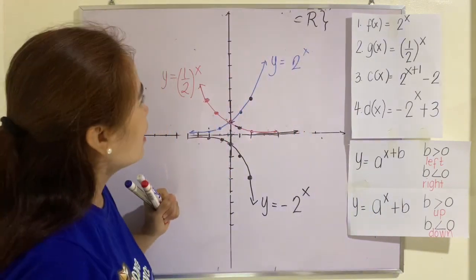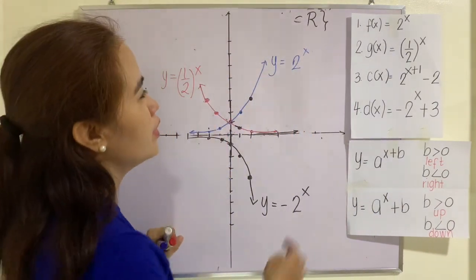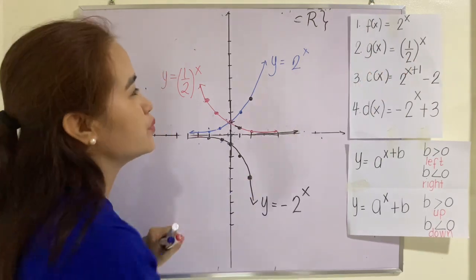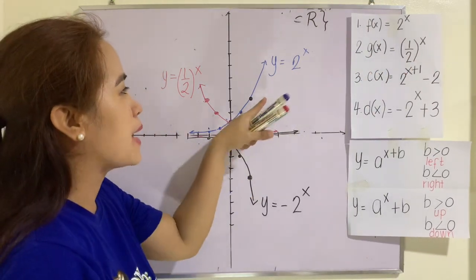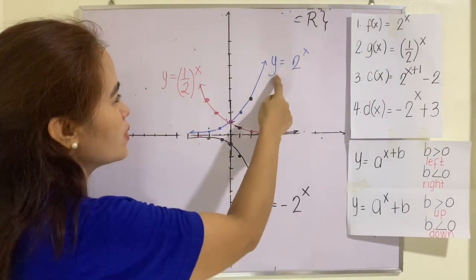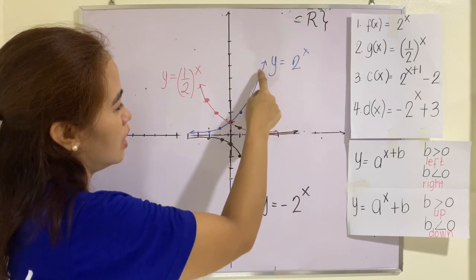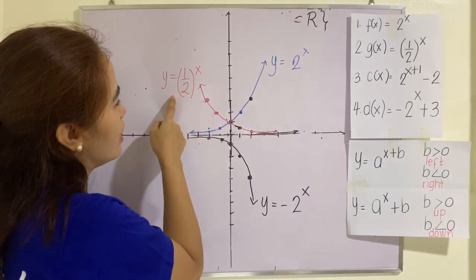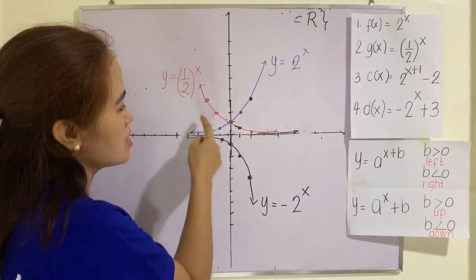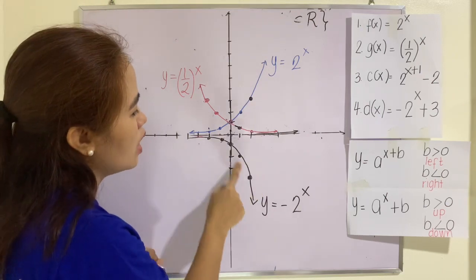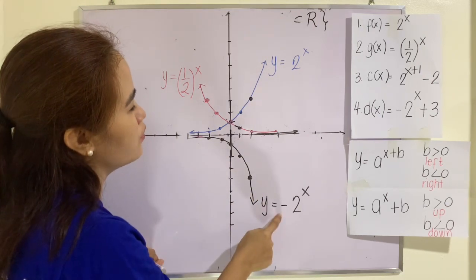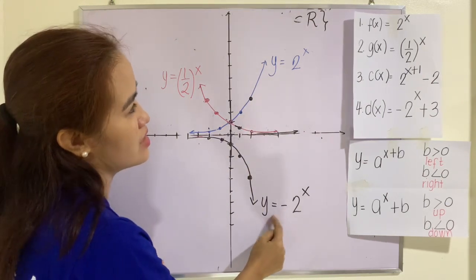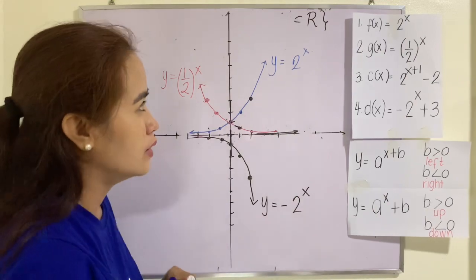I have already graphed here the first and the second functions. These are the base graphs. This one is an increasing function, and this one is a decreasing function. And this one is just a reflection of this graph since this one is negative.